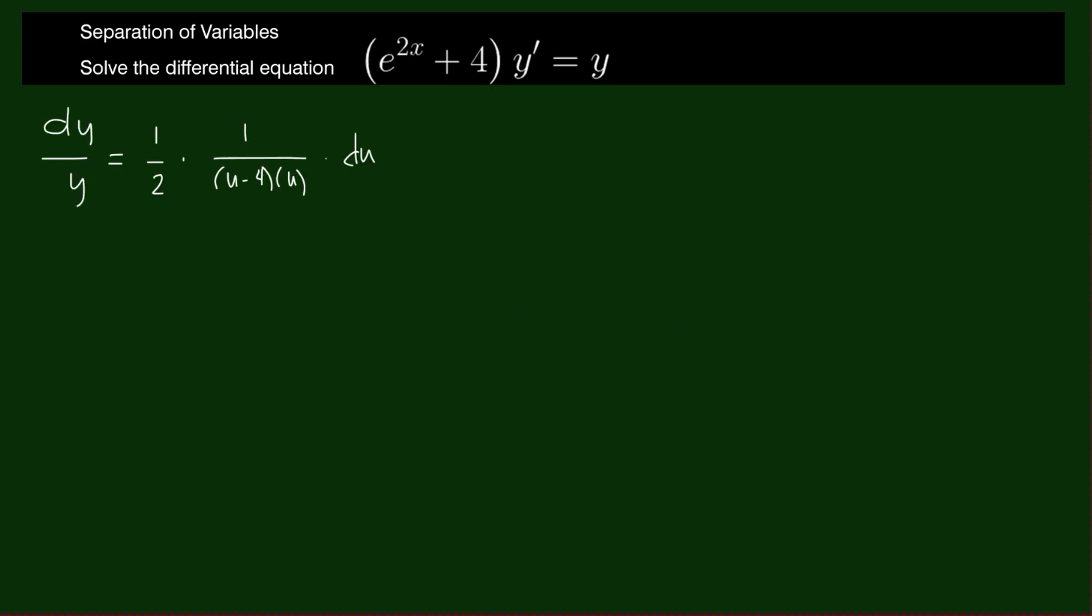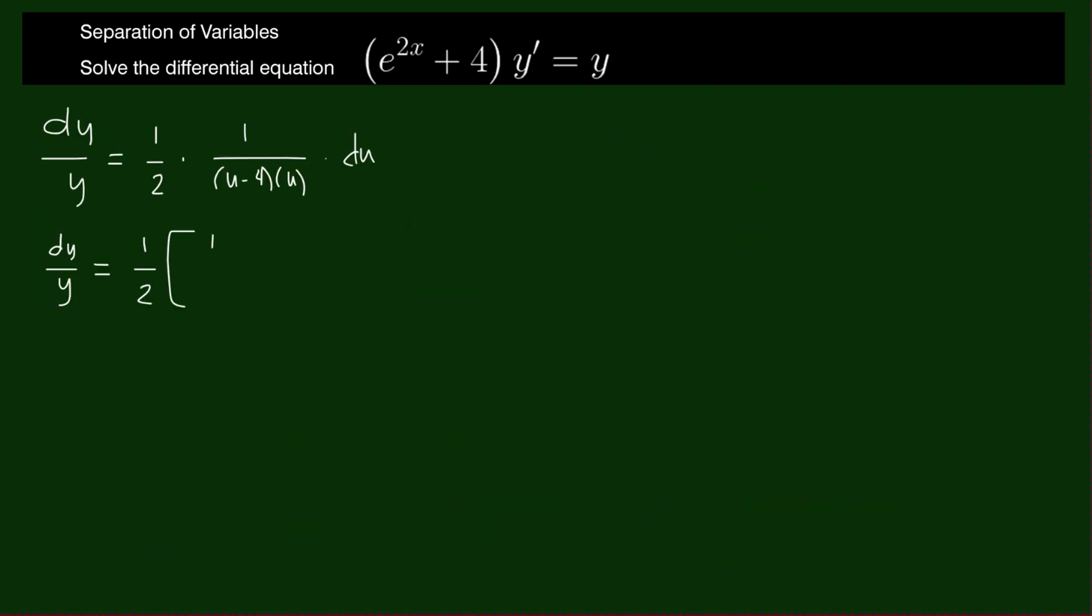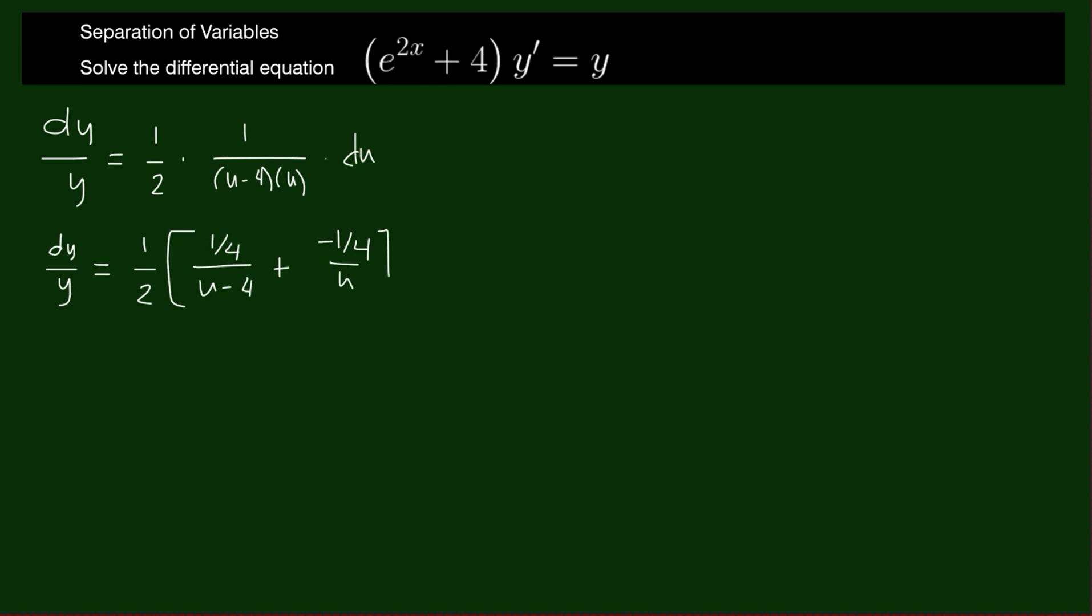The right side of the equation becomes: a is 1 fourth, so this is 1 fourth over u minus 4 plus b, which is negative 1 fourth over u, times du.